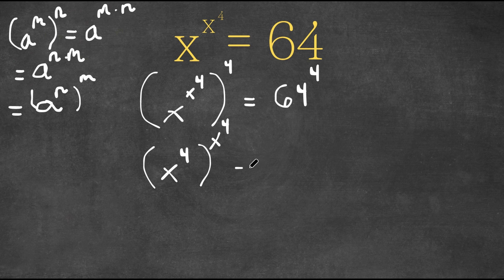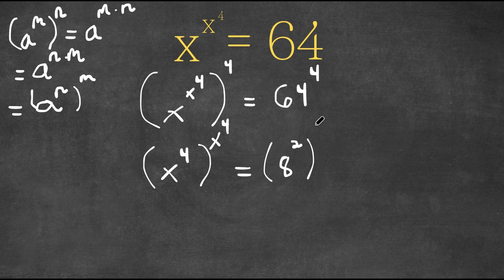On the right side, I'm going to rewrite 64 as 8 squared. So now we have 8 squared to the power of 4. Remember, if we have a to the power of m to the power of n, this equals a to the power of m times n — meaning 8 to the power of 2 to the power of 4 equals 8 to the power of 2 times 4, which is 8 to the power of 8.